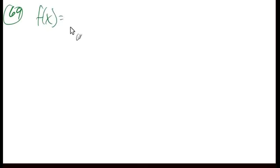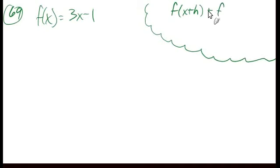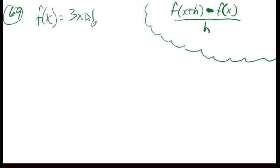So that is the rationalizing method. Now we'll look at two difference quotients. First, number 46/9: the difference quotient for f of x equals 3x minus 1. Remember, the difference quotient is f of x plus h minus f of x over h. We need f of x plus h — that means x plus h goes in for x — minus f of x over h. And we want to find the limit of that quotient as h goes to 0.